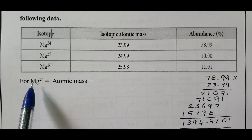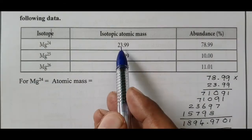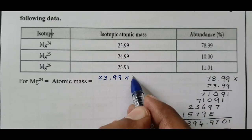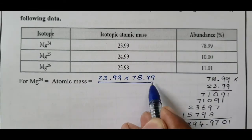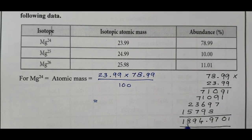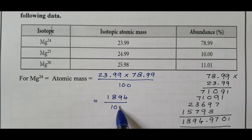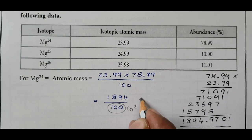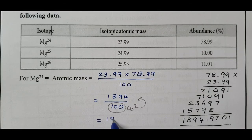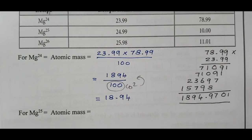For Magnesium-24, the atomic mass equals isotopic atomic mass 23.99 multiplied by abundance 78.99 divided by 100. When we multiply these two we get 1894, so 1894 divided by 100 — since 100 is 10 power 2, bringing it to the numerator gives 10 power minus 2 — and 1894 into 10 power minus 2 gives the answer 18.94 as the atomic mass of Magnesium-24.